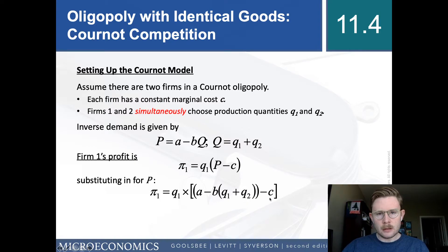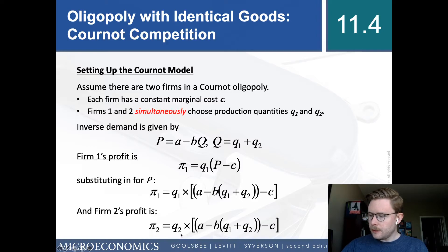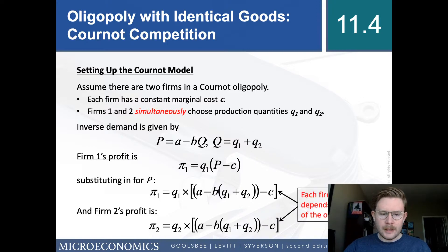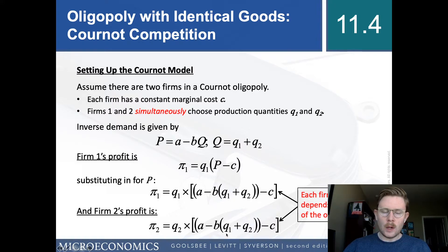Firm two's profits are exactly the same, except we multiply by Q2 since we're looking from firm two's perspective. The important thing to note is that each firm's profits depend on the actions of the other firm. Firm one has firm two's quantity in its profit function, and similarly, Q1's production is in firm two's profit function.